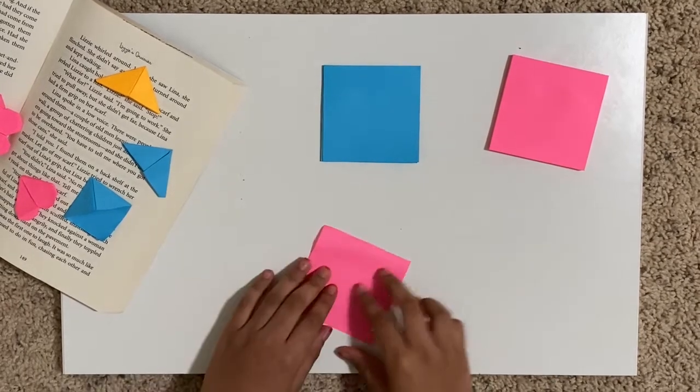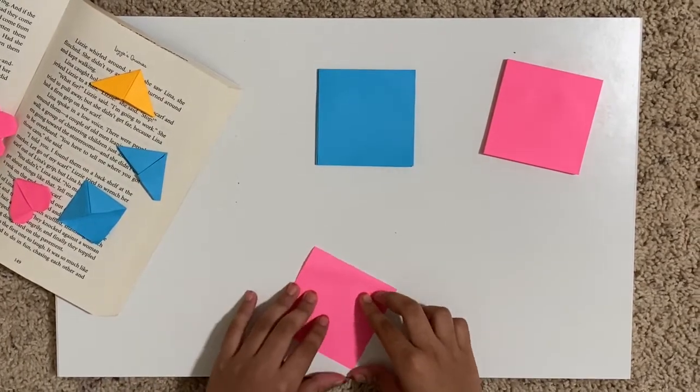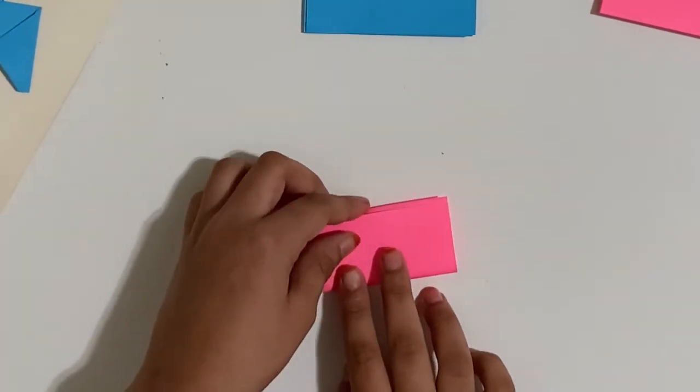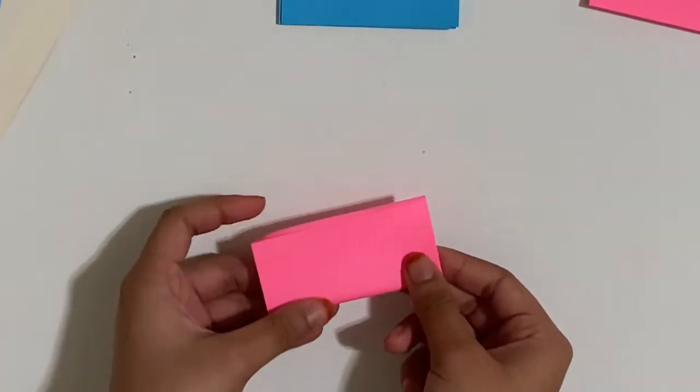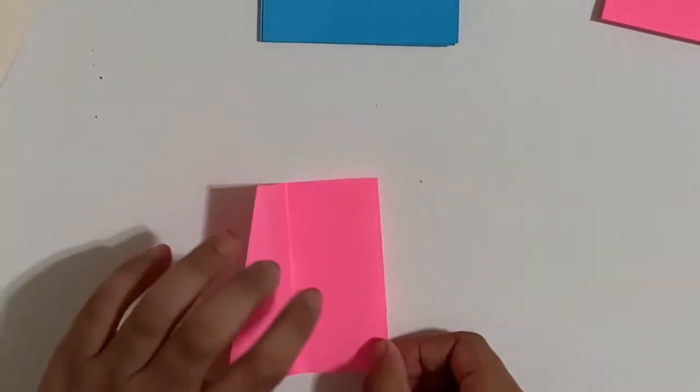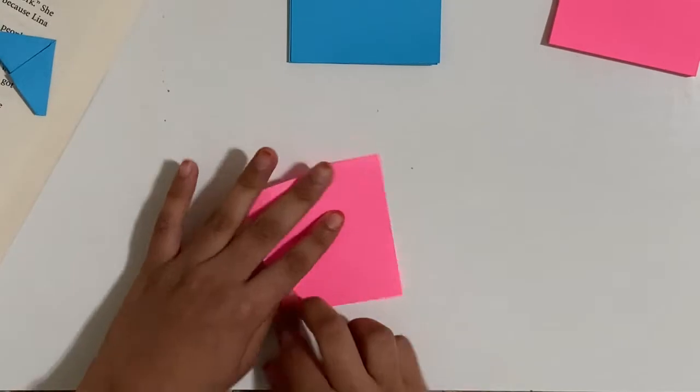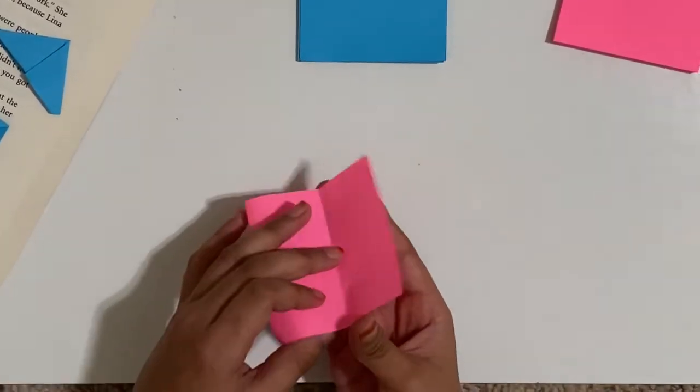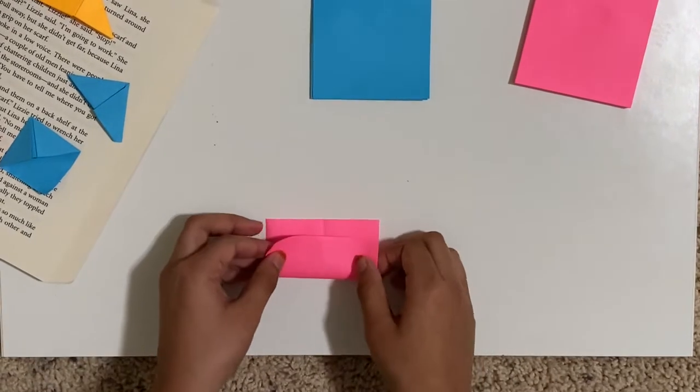And we're going to fold them in half like this. And now we are going to take that out and do it to the other half. So just turning it over like this to make, so that your creases make kind of like a plus sign.